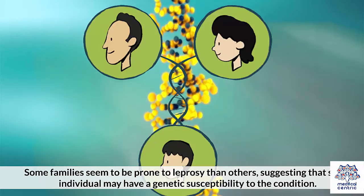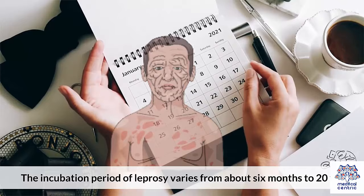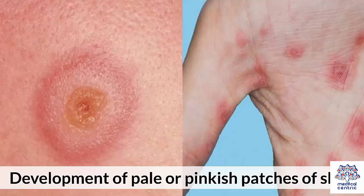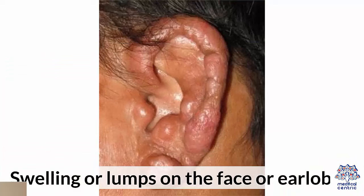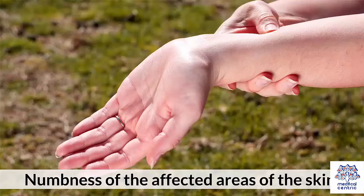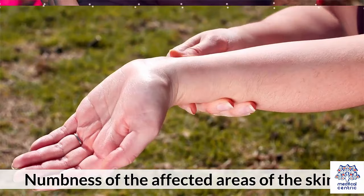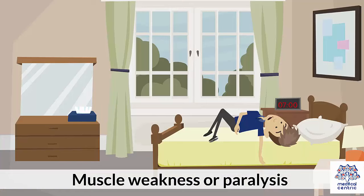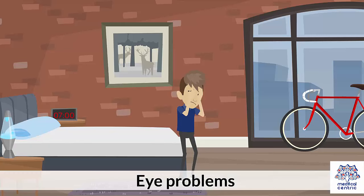The incubation period of leprosy varies from about 6 months to 20 years. Symptoms include development of pale or pinkish patches of skin, ulcers on the soles of the feet, stuffy nose and nosebleeds, swelling or lumps on the face or earlobes, and dry skin. Symptoms caused by nerve damage include numbness of the affected areas of the skin, enlarged nerves especially around the elbow and knee, muscle weakness or paralysis, and eye problems.